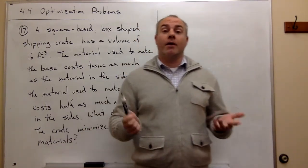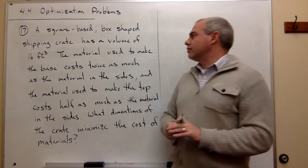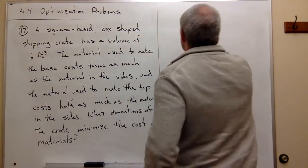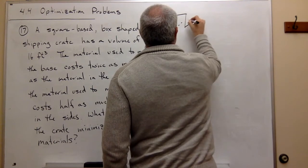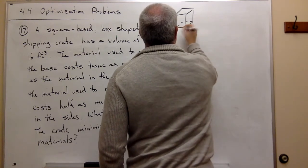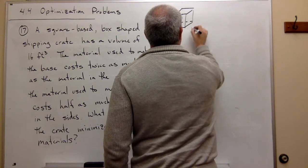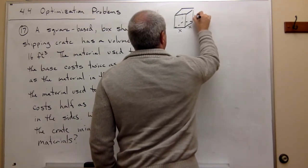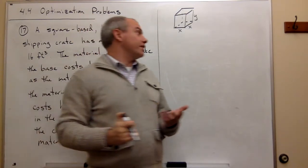A couple things we can do here. First, we can start out by drawing a picture of this crate. The key thing is it's box-shaped but it's square-based. So the base of this thing is a square. We can call this side x, and this side x, and then we have some height — let's call the height y. So these are the dimensions of this crate that we're dealing with.